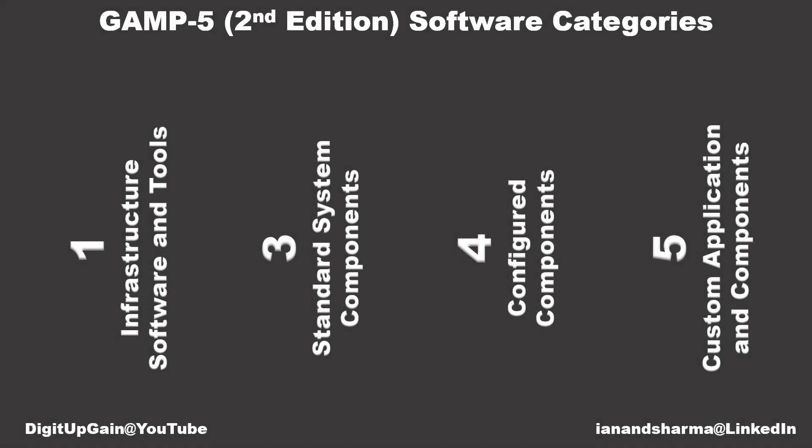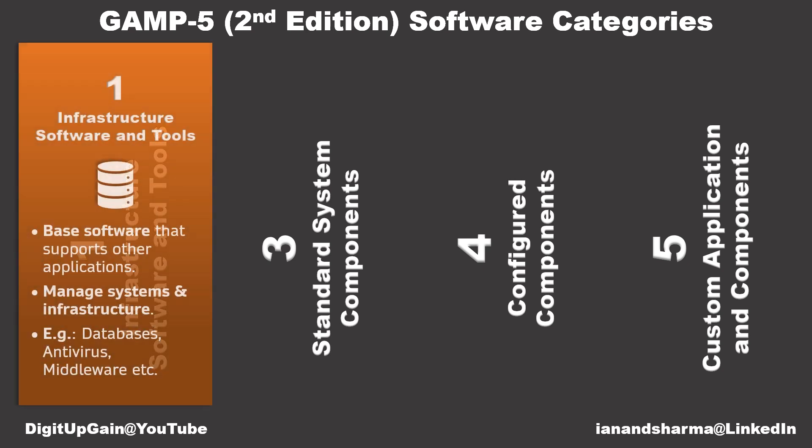What are GAMP5 software categories? Let's break them down in a simple way. Category 1 is the foundation. It includes software that supports other applications like databases, programming languages, and middleware. Think of it as the building blocks for other systems.